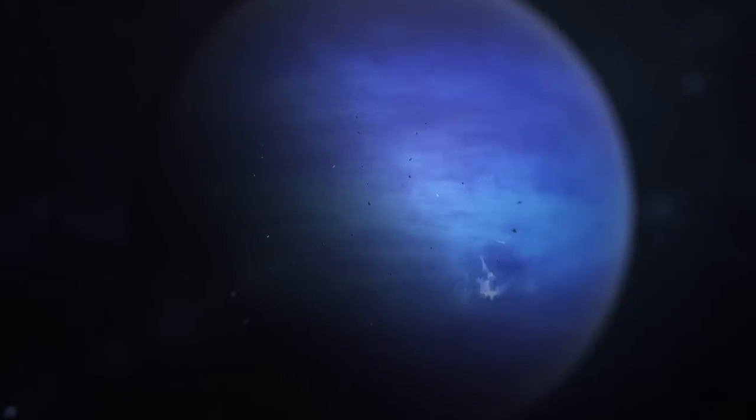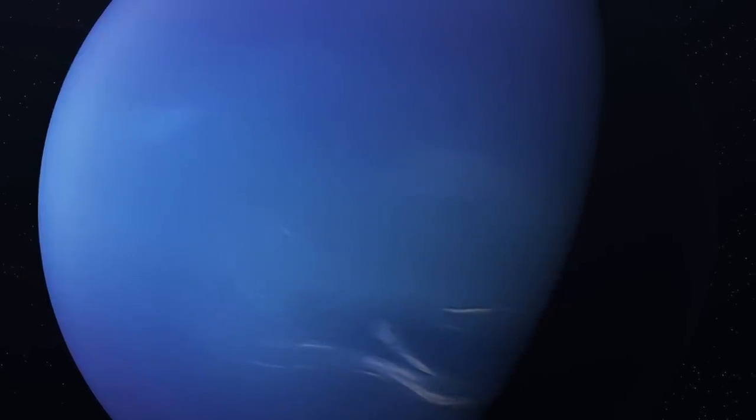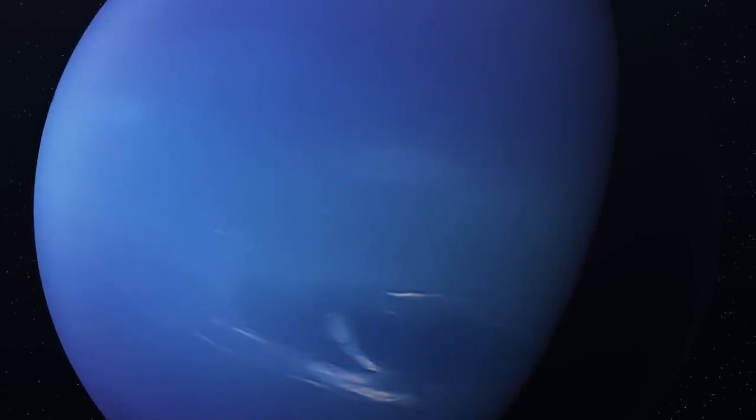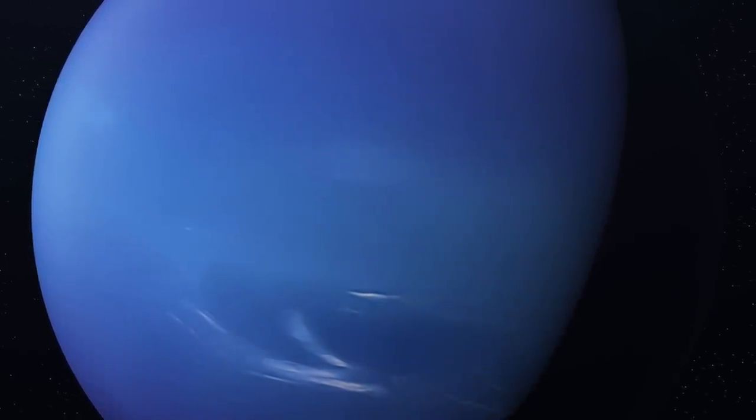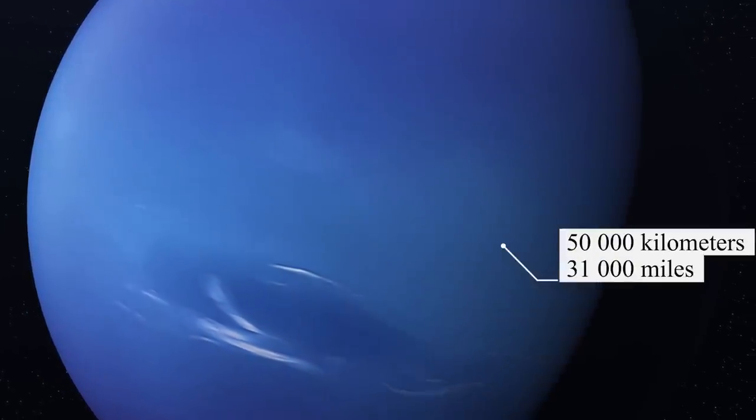Neptune, two hours of travel at the speed of light is necessary to reach it. At a distance of 1630 million kilometers from Uranus, it is the 8th and last planet of our solar system. Its diameter, slightly smaller than that of Uranus, is close to 50,000 kilometers. Neptune has the same properties as Uranus.